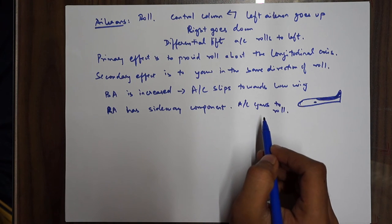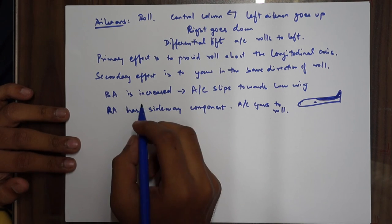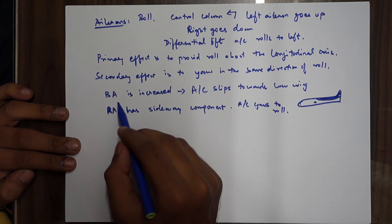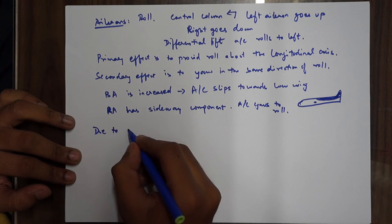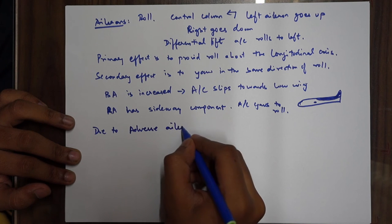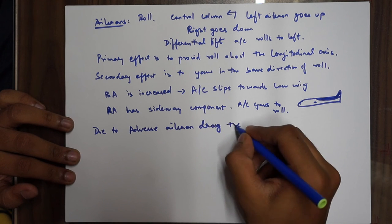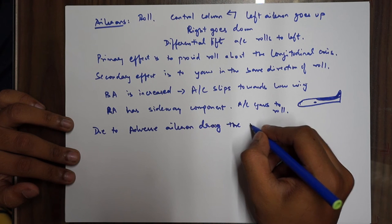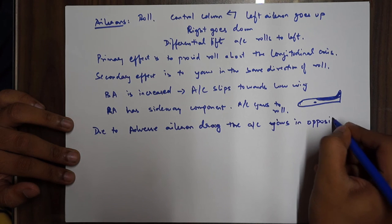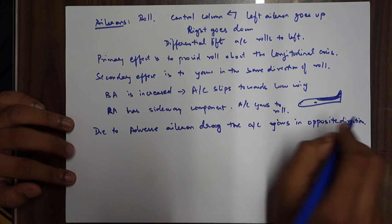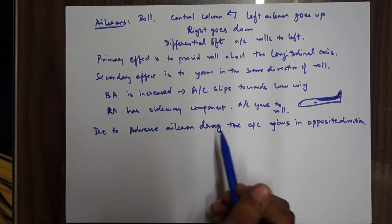There is also another secondary effect of the aileron — to yaw in the opposite direction. You may wonder why — the first secondary effect is yaw in the same direction of roll, but due to adverse aileron drag, another secondary effect causes the aircraft to yaw in the opposite direction. We'll discuss adverse aileron drag in more detail later.